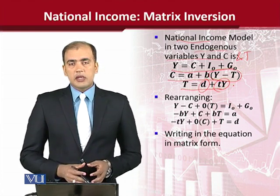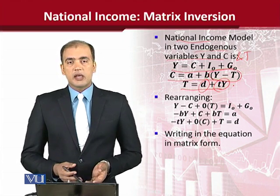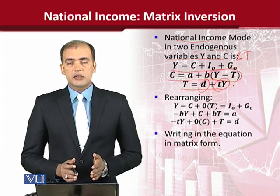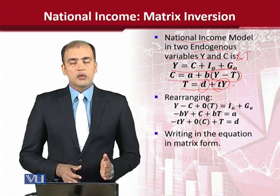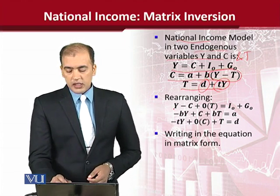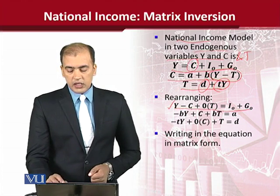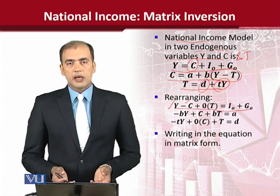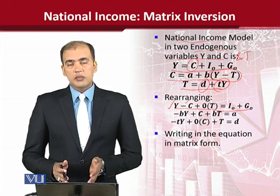When we talk about the matrix inversion approach, or any system of equations to be written in matrix form, we take all endogenous variables to the left-hand side of each equation. As you can see, we are going to rearrange the first equation: Y minus C is on the left, and T — though not present in the first equation — is written with coefficient zero as a reminder that there are three endogenous variables. The right-hand side contains all constants or exogenous variables.